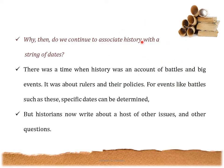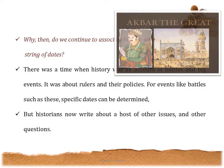Then why do we continue to associate history with a string of dates? It is because there was a time when history was an account of battles and big events — it was about rulers and their policies. Historians used to write the year when a king was crowned, the year he was married, the year the next ruler succeeded to the throne. For all these events like battles, specific dates can be determined. For example, the third Mughal emperor Akbar was born on 15th October 1542 and died on 27th October 1605.